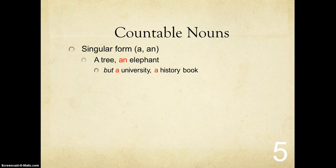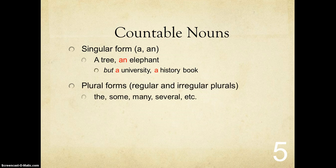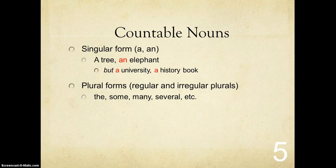But I say a university because university begins with a consonant sound — university — or a history book. In English we pronounce the H. For countable nouns, I also have plural forms. I can use regular and irregular plurals. And to quantify the words, I use words like the, a, some, many, several, etc.